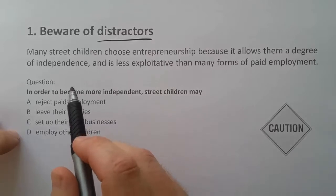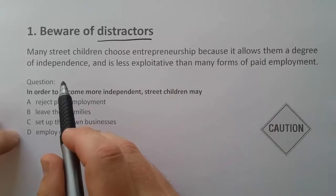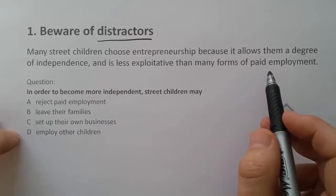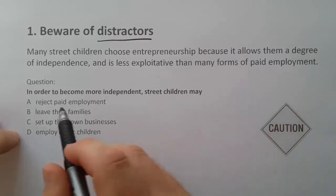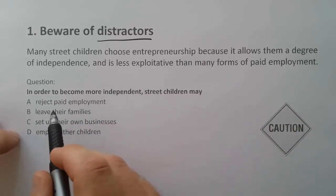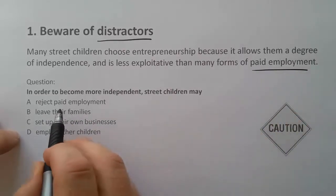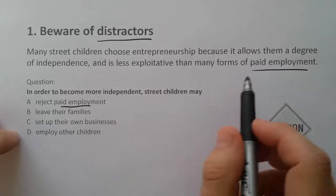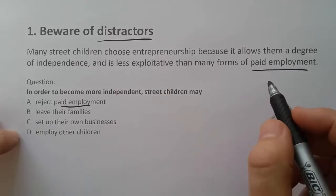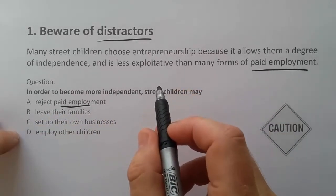So let's have a look at this example. 'Many street children choose entrepreneurship because it allows them a degree of independence and is less exploitative than many forms of paid employment.' The question states: 'In order to become more independent, street children may reject paid employment.' Straight away you might think there's a total match there, so that must be the answer. A lot of people, especially if they're running out of time, will just say that must be correct without reading more deeply.